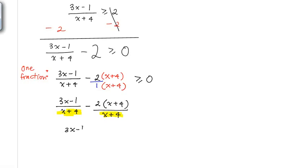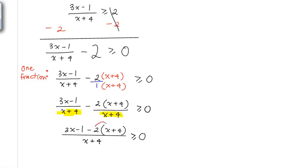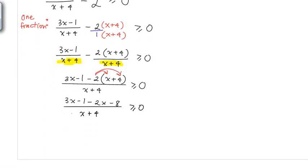So I'll have (3x minus 1 minus 2 times (x plus 4)) all over (x plus 4). Distributing the minus 2 in the numerator gives 3x minus 1 minus 2x minus 8, all over (x plus 4), still greater than or equal to 0. Combining like terms: 3x minus 2x gives x, and minus 1 minus 8 gives minus 9. So we have (x minus 9) over (x plus 4) greater than or equal to 0. This completes step one.